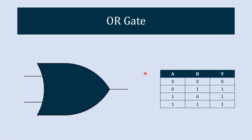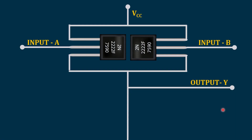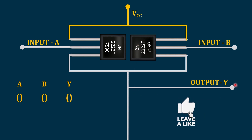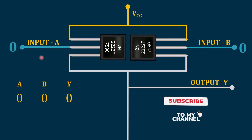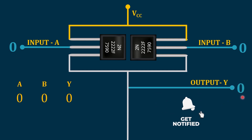The next gate is the OR gate. The OR gate is a kind of addition: 0+0=0, 0+1=1, 1+0=1, and 1+1=1. It is constructed like two transistors connected in parallel. When both inputs are 0, VCC does not reach the output, and the output remains 0.